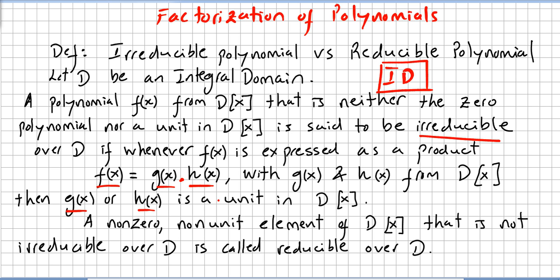A non-zero, non-unit element of the polynomial integral domain that is not irreducible over D is called reducible over D.